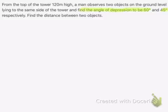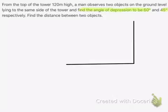Find the distance between the two objects. Now let us first draw our tower. Let's say this is the tower and this is the ground level. So the tower is 120 meters high. Let's say the tower is AB, 120 meters high. A man observes, here is the man at the top of the tower, and he observes two objects on the ground level lying to the same side of the tower. I've taken the left-hand side of the tower.